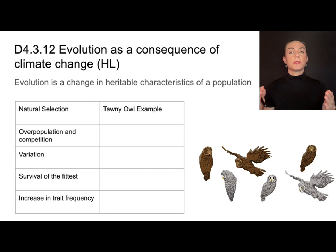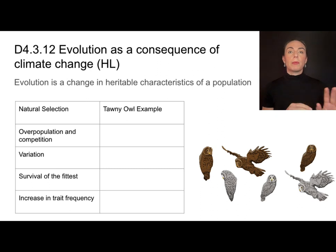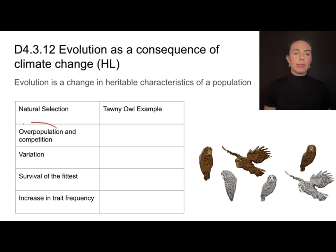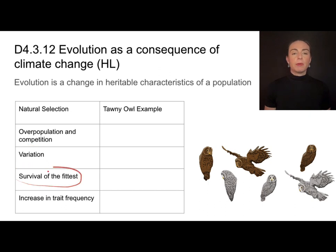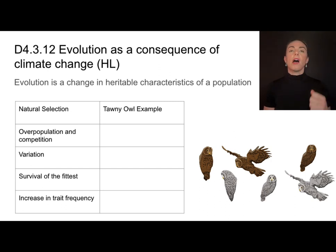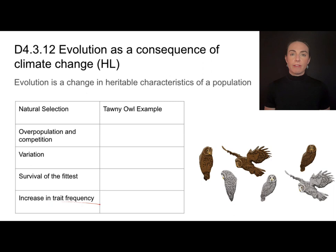For populations able to survive climate change, it is causing them to evolve. Evolution is a change in heritable characteristics in a population. Evolution by natural selection requires overpopulation that sets up competition, variation, and survival of the fittest — fitness being the degree to which heritable characteristics give an advantage in survival or reproduction. Those individuals with that advantage survive, reproduce, and pass along their genes more frequently, leading to an increase in that trait's frequency.